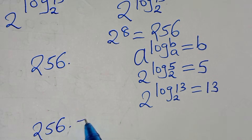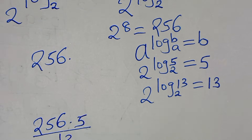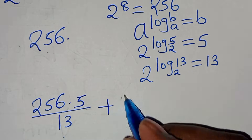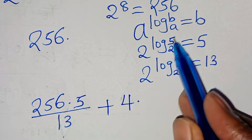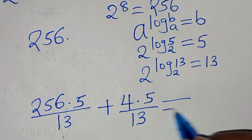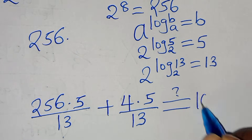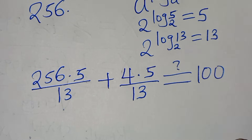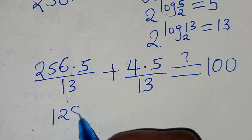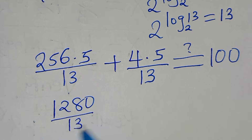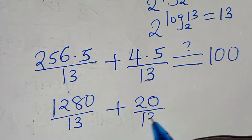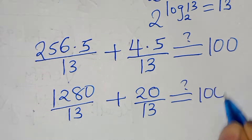This gives 256 × 5 / 13 + 4 × 5 / 13 = 1280/13 + 20/13. This should equal 100.